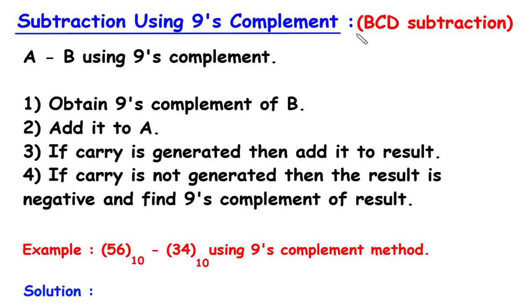BCD subtraction using 9's complement. Suppose we have to solve A minus B using 9's complement. The first step is to obtain the 9's complement of B. Then add that 9's complement of B to A. If a carry is generated, add it to the result. If carry is not generated, the result is negative and find the 9's complement of the result.